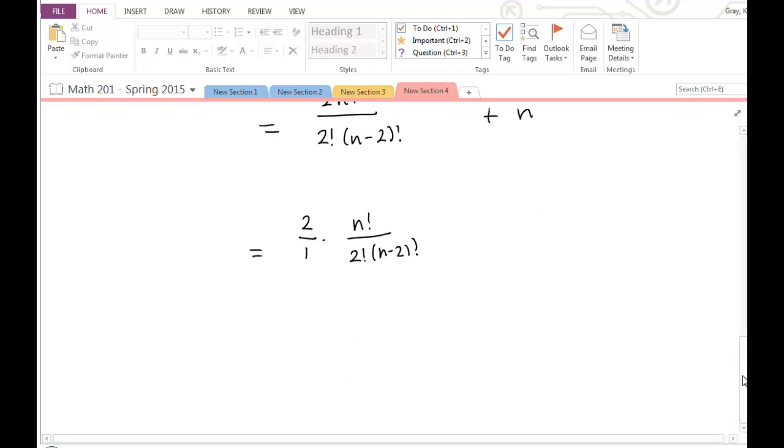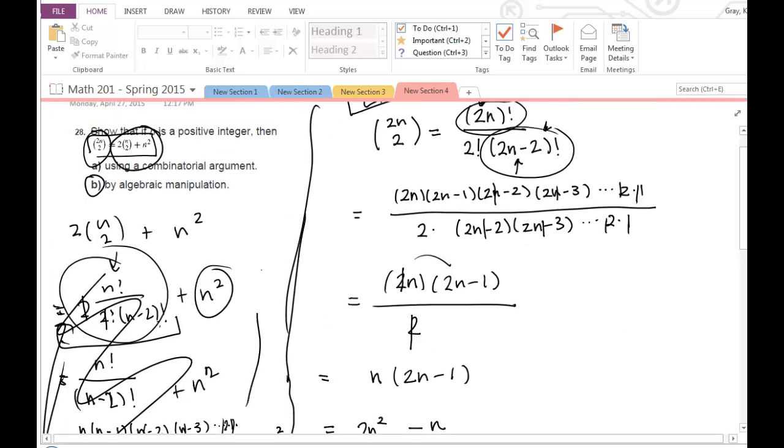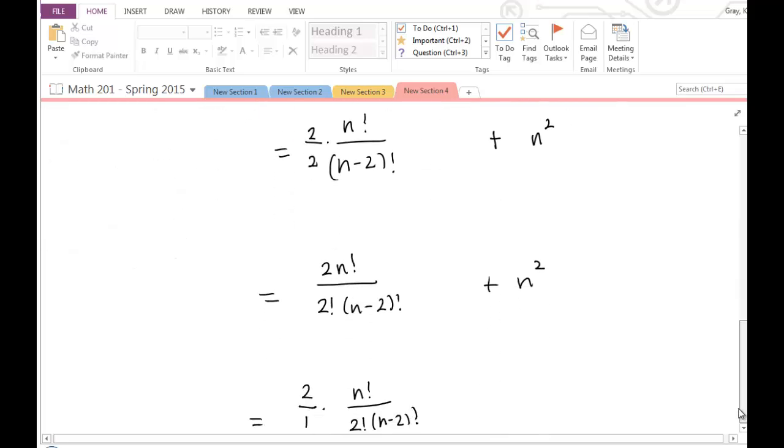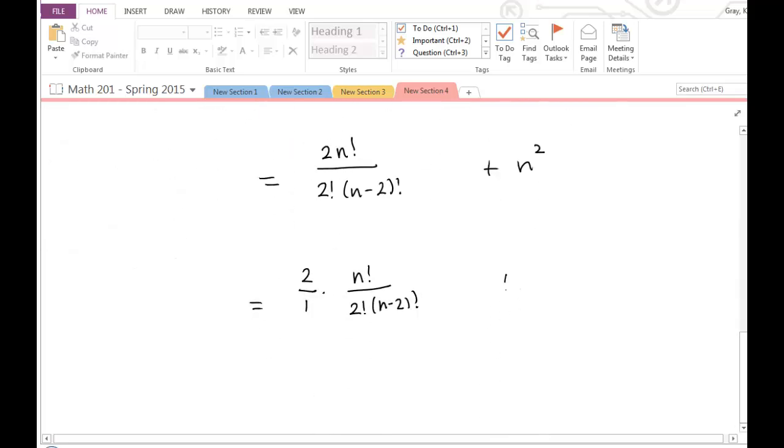And again, I'm just working this backwards. Because I have to start on one side and keep going. So I'm just working what I talked through on the other side backwards here. So then I have 2 divided by 1 is 2. Let's see, look, this is n choose 2. We're done. We did it.